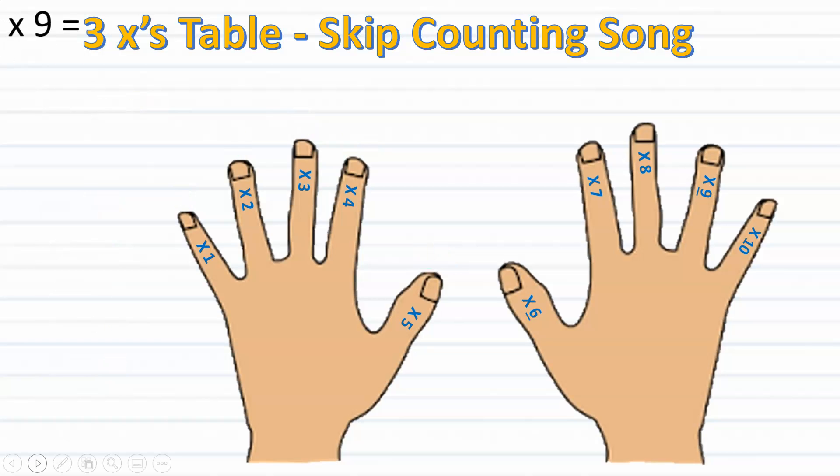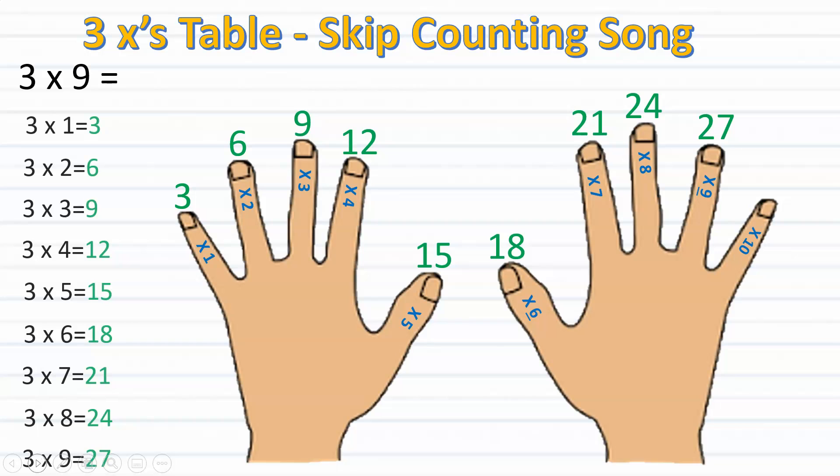For our last problem we will be multiplying three times nine. Now I want you to try the skip counting song on your own to see if you'll end up at the correct answer. Okay, now let's check. Three, six, nine, twelve, fifteen, eighteen, twenty-one, twenty-four, twenty-seven. Did you land on twenty-seven? If you did, you're correct. Therefore we know that three times nine equals twenty-seven. Good job.